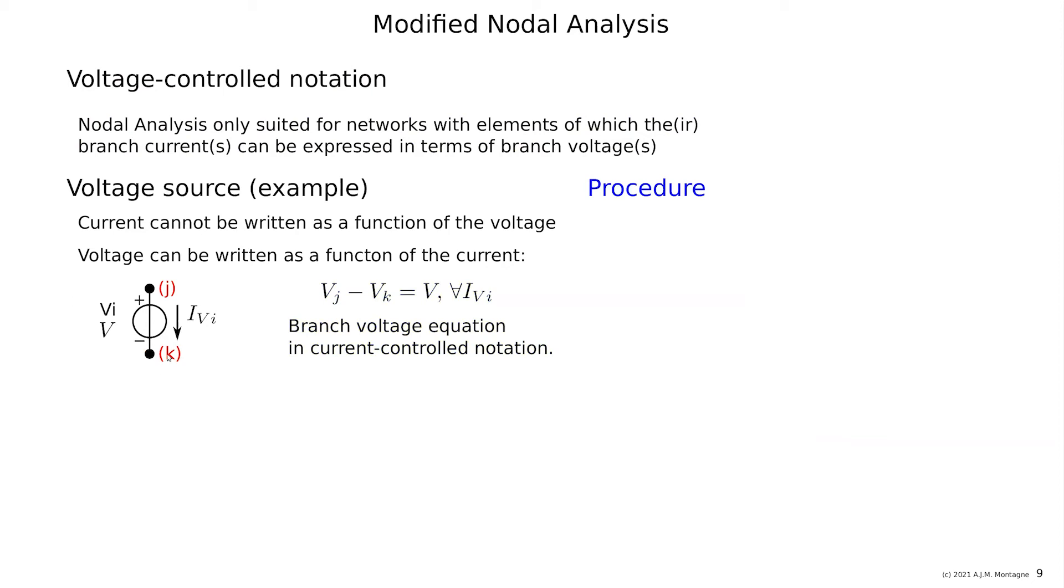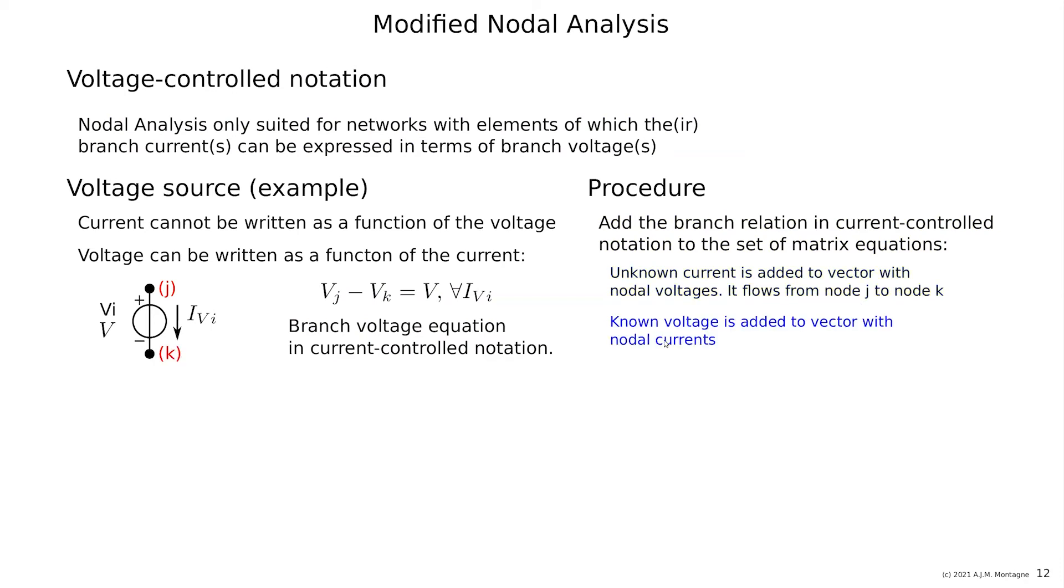So the procedure is add the branch current, this I_V, to the set of variables that you want to solve. And add another expression in the matrix, which is this nodal voltages V_J minus V_K equals V to solve it. So unknown current is added to the vector with nodal voltages. It flows from J to K. And the known voltage is added to the vector with nodal currents. That's basically what we're doing.